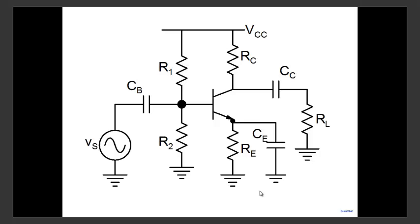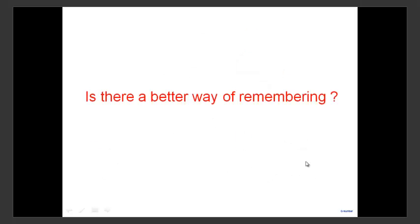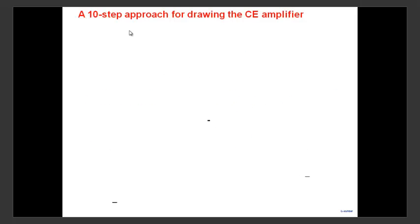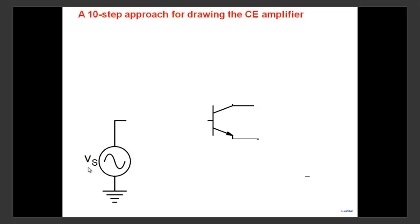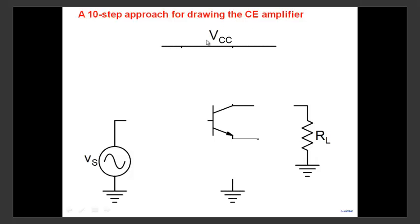Here is a 10-step approach for drawing the common emitter amplifier, based on logic. You may say why such a long series, but there's a logic. We're talking about a BJT amplifier, so step one: I start with an NPN transistor. I need a source to amplify, and the amplified output will be delivered to a load RL. An amplifier takes power from the supply and transfers it to the load, so the next step is I have a supply.